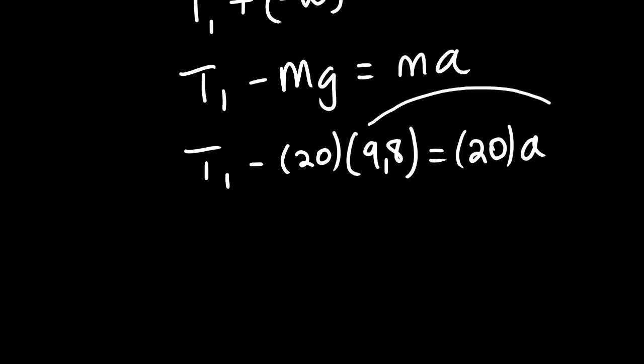So we can take this to the other side. So we have T1 equals 20A plus, let us quickly simplify this, 20 multiplied by 9.8 is 196. So this is equation 2.